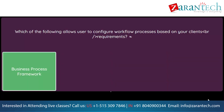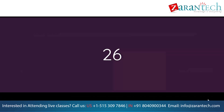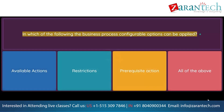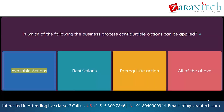In which of the following can the business process configurable options be applied? Option 1: Available actions. Option 2: Restrictions. Option 3: Prerequisite action. Option 4: All of the above.